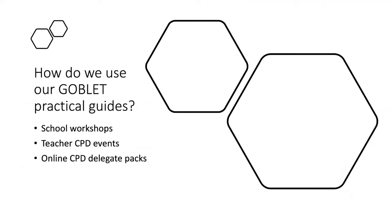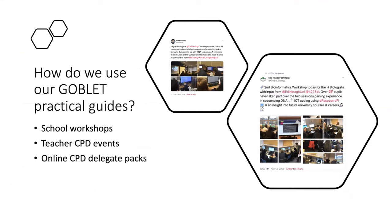To finish up, how do we actually use our Goblet practical guides? We use them a lot and we really push them out there because they're very professional looking documents, they're good for teachers to keep, and also they're good for the legacy of our project, which funders are always keen to hear about. We give them out at school workshops—not to all the pupils, the pupils have other handouts—but we give them to the teachers and leaders, leave them in the staff room.